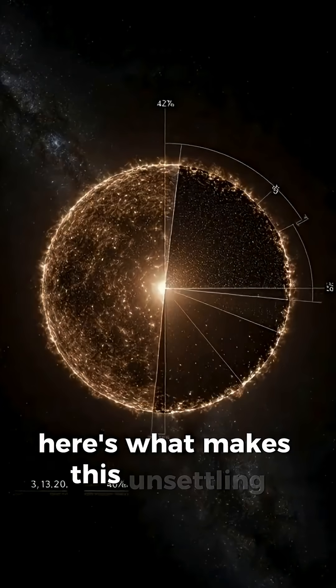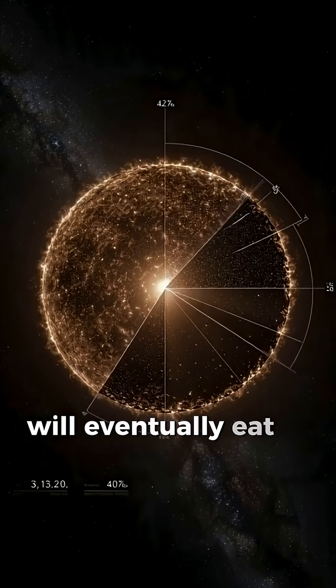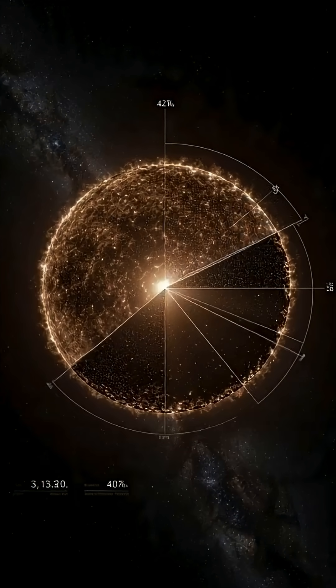Here's what makes this unsettling. 30% of all sun-like stars will eventually eat at least one of their planets, including ours.